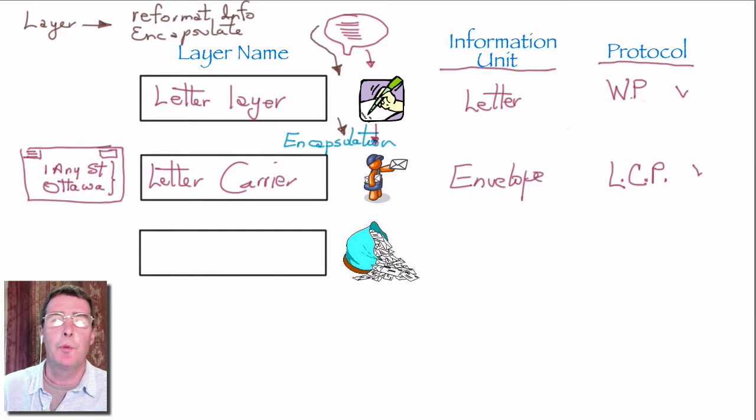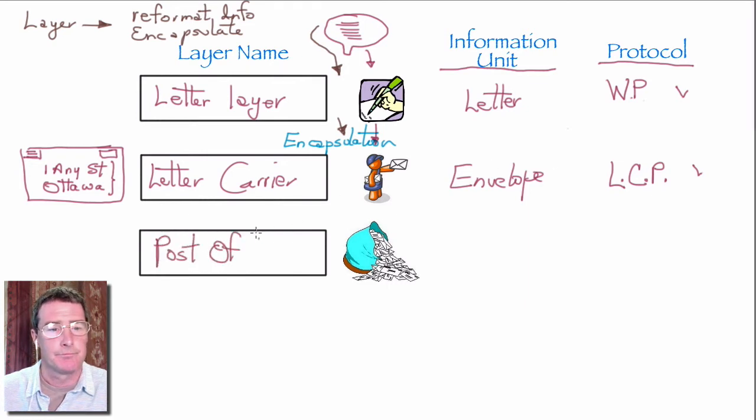We now propose that we create an organization called a post office. So this layer will be called the post office layer, and it's going to implement the post office protocol. At this layer, the post office is going to take all the envelopes that are going to Ottawa and put them in one mail bag so that they can get delivered. Envelopes that go to Calgary will go in a different mail bag.